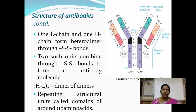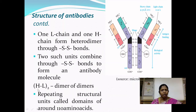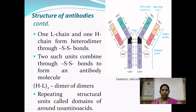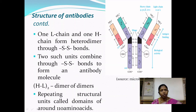One light chain and one heavy chain are connected through disulfide bonds to form a heterodimer. Two such heterodimers are again connected by disulfide bonds to give rise to an antibody molecule — the antibody molecule is a dimer of dimers. In each peptide chain, there are repeating structural units called domains. Each domain is formed of around 110 amino acids, and each domain is interconnected to the next by a loop of around 60 amino acids.